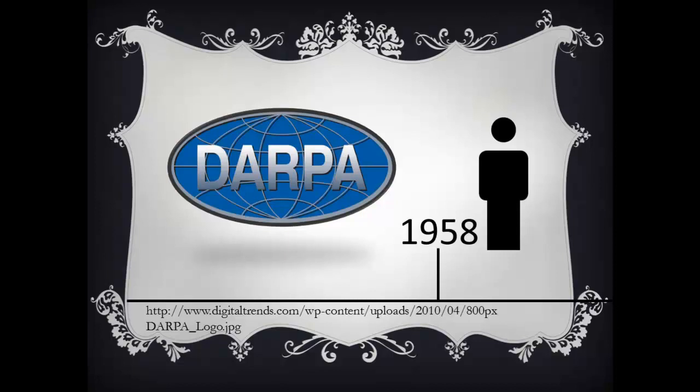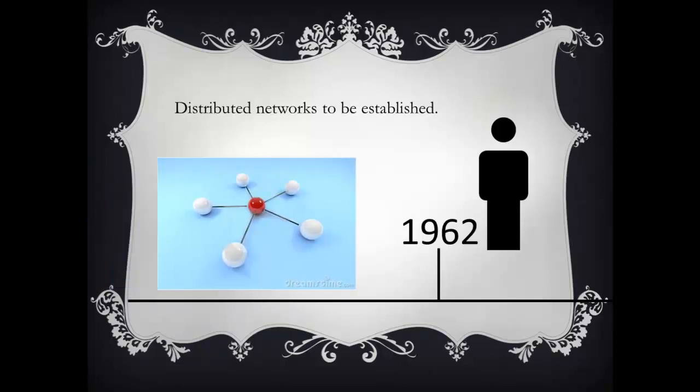Packet switching seemed to be an idea that wanted to be discovered. The packet switching concept was first invented by Paul Baran in the early 1960s. In 1962, the American aircraft discovered missiles in Cuba. At the time there was only centralized architecture, which we know as star topology, so a decentralized network was to be developed.